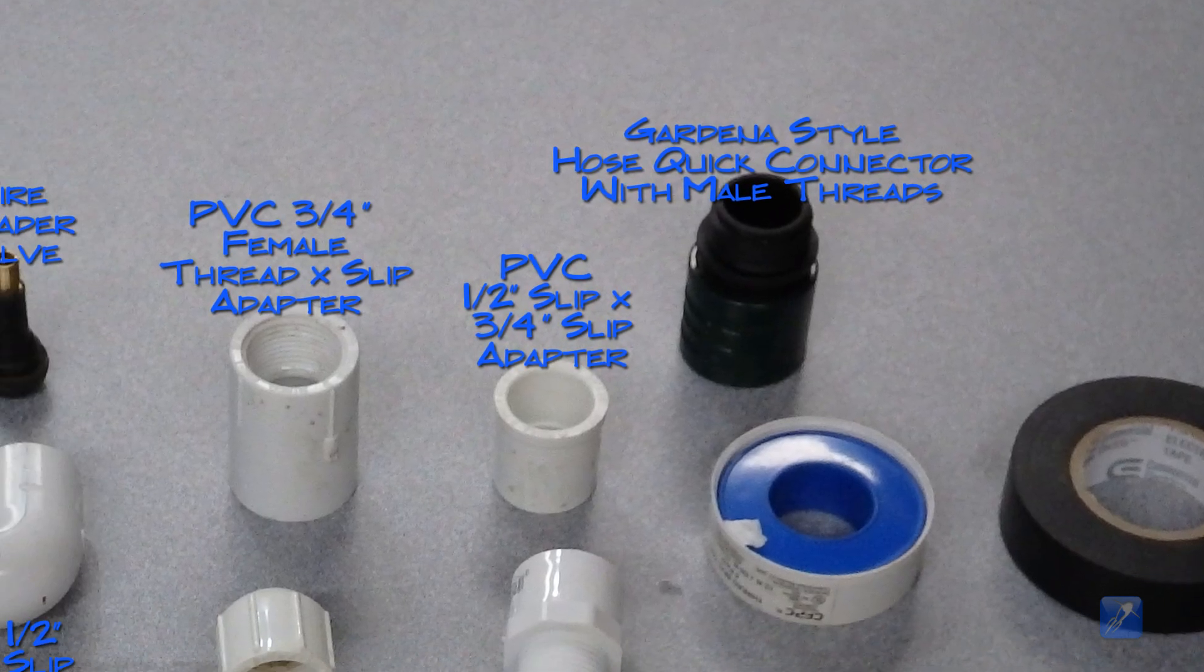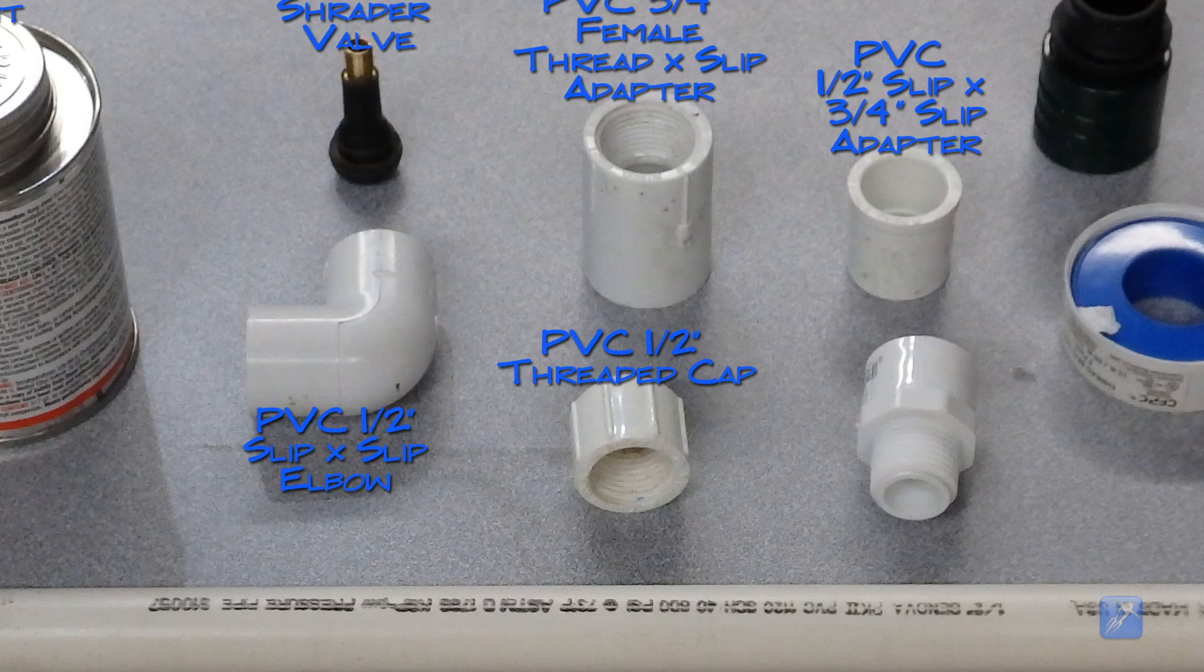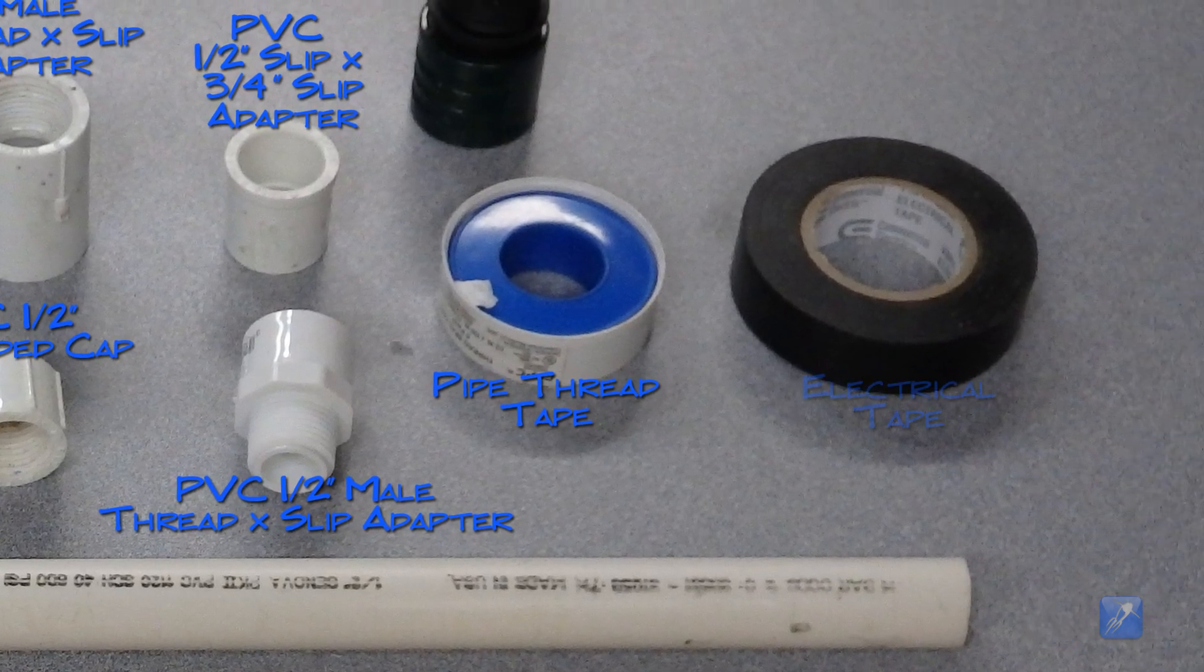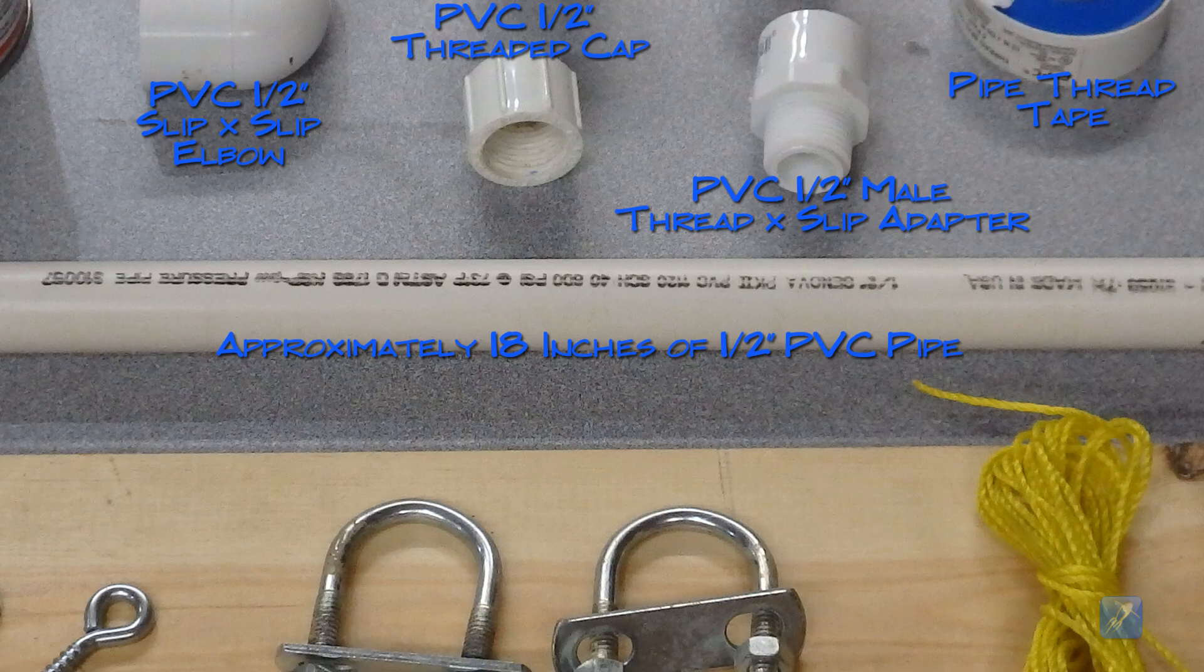A ½ inch slip to ¾ inch slip adapter, a ½ inch female threaded cap, a ½ inch male thread to ½ inch slip adapter, Teflon thread tape, electrical tape, and about 18 inches of ½ inch PVC pipe.